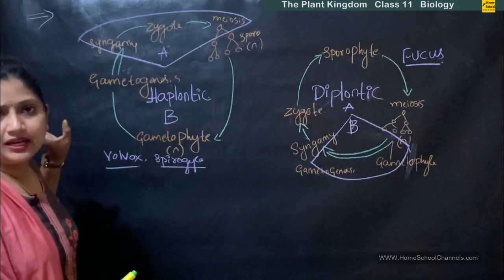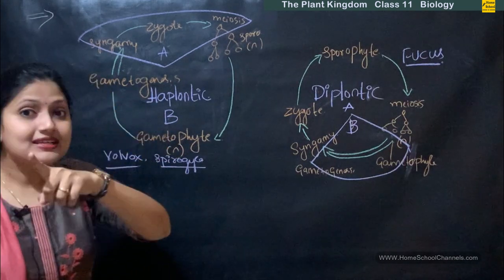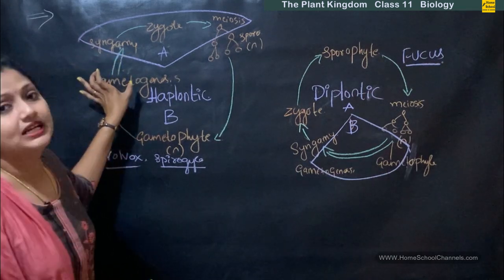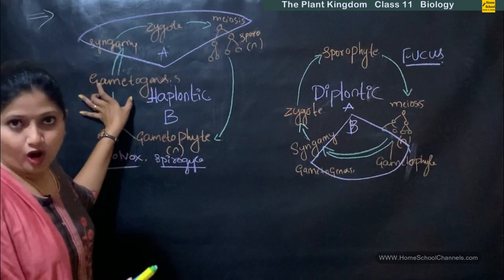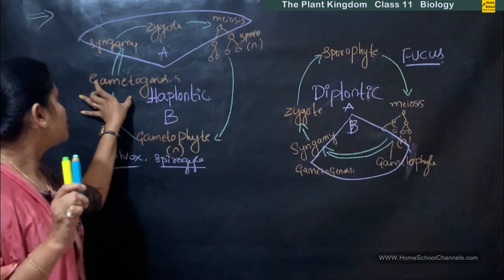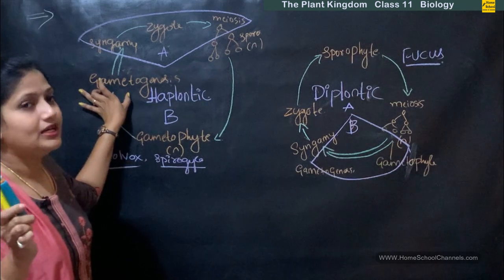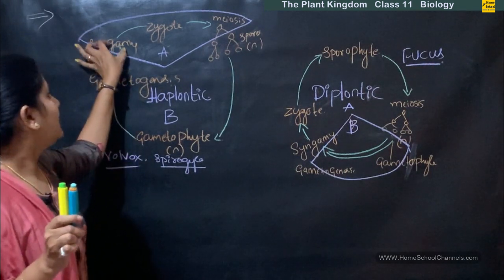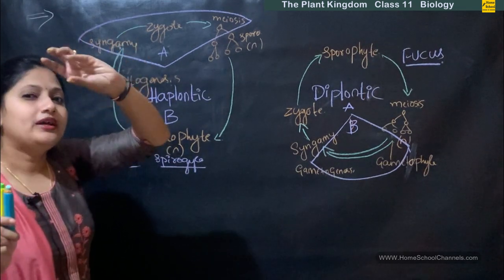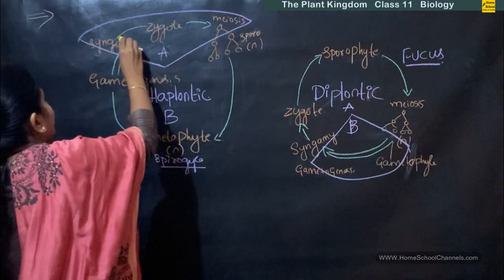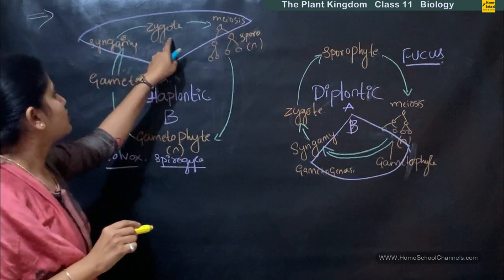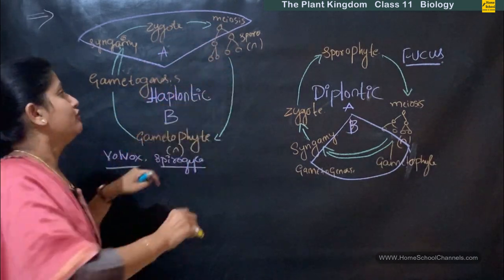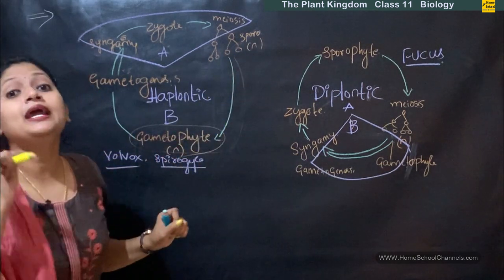The haplontic life cycle is a very simple life cycle. We had seen it in algae wherein the thallus is formed and the gametophyte is the main plant body. Starting from the formation of gametes: female and male gametes are formed, which are haploid in nature. When they fuse — syngamy, which is the fusion of male and female gametes — we get a diploid zygote. From this diploid zygote, meiosis happens. After meiosis, the haploid spores are formed. From the haploid spores, the gametophyte, which is the main plant body, is formed.